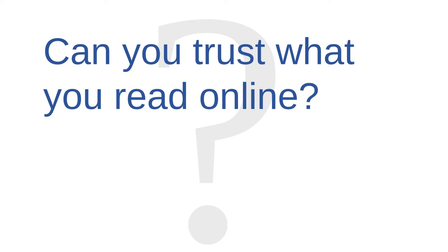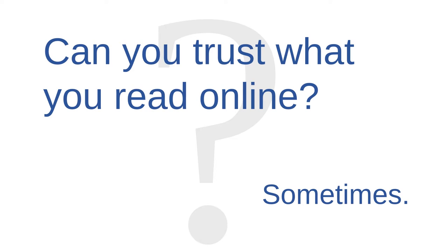Interpersonal issue number five is credibility. Can you trust what you read online? Well, that's a trick question — it invites a simple yes or no response, but the best answer is more complex than that. Some things written online are trustworthy; others are not. There are many different communication media: newspapers, books, letters, emails, instant messages, websites, telegraphs, smoke signals, face-to-face conversations, and many more. Any one of those media could be credible or not. Credibility isn't tied all that closely to media choices — it's tied much more closely to who said it, what they said, and under what circumstances they said it.